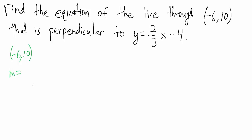So what is m? We're told that the line we want is perpendicular to y equals two-thirds x minus four. The key thing to remember is that if two lines are perpendicular to each other, then their slopes are negative reciprocals of each other. The equation is already in slope-intercept form, so two-thirds is the slope of the given line.